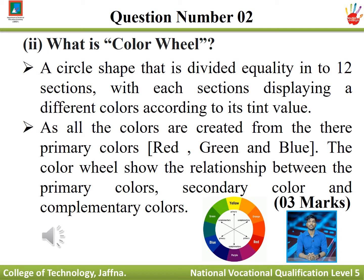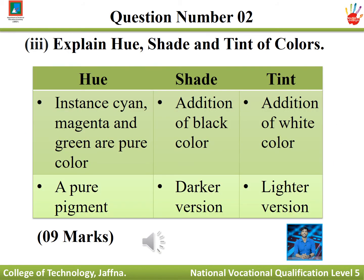All colors are created from the primary colors — red, green, and blue. The color wheel shows the relationship between primary colors, secondary colors, and complementary colors.